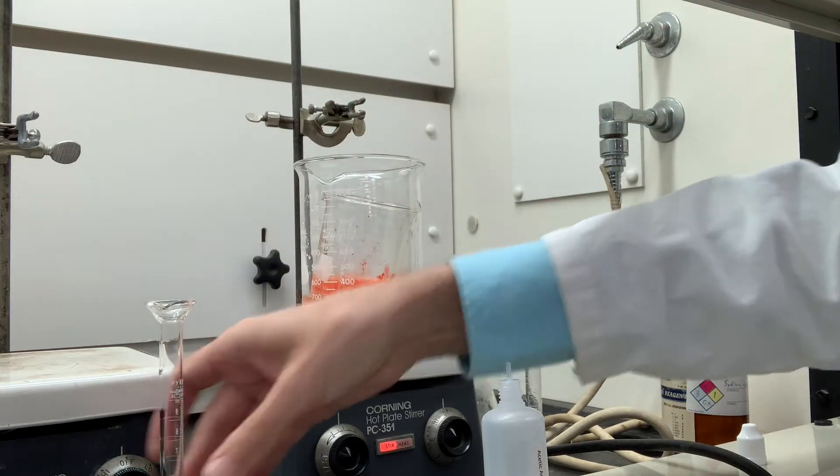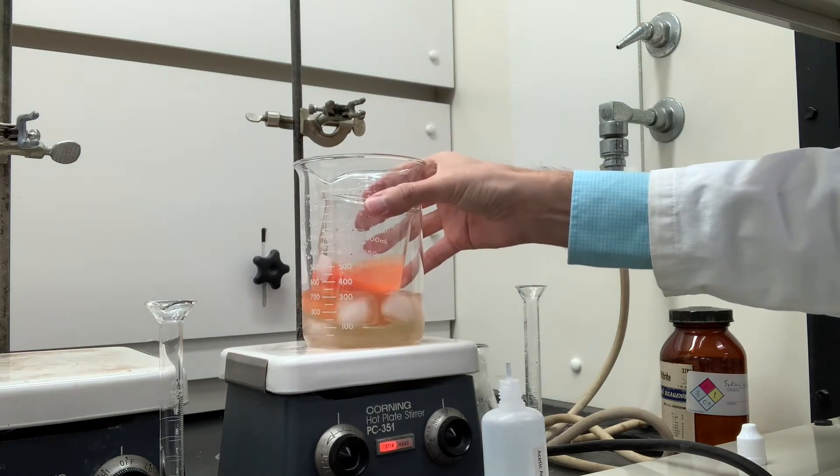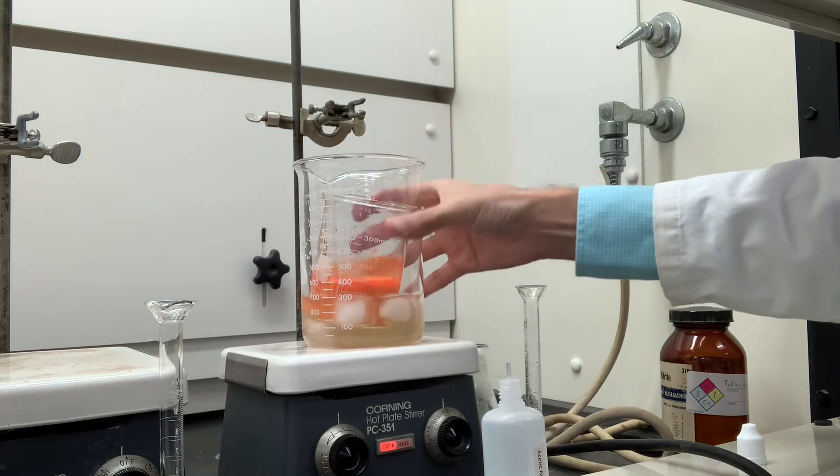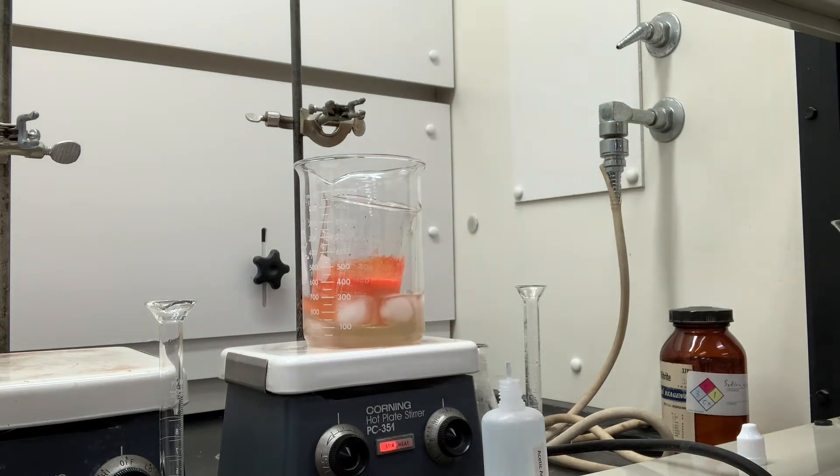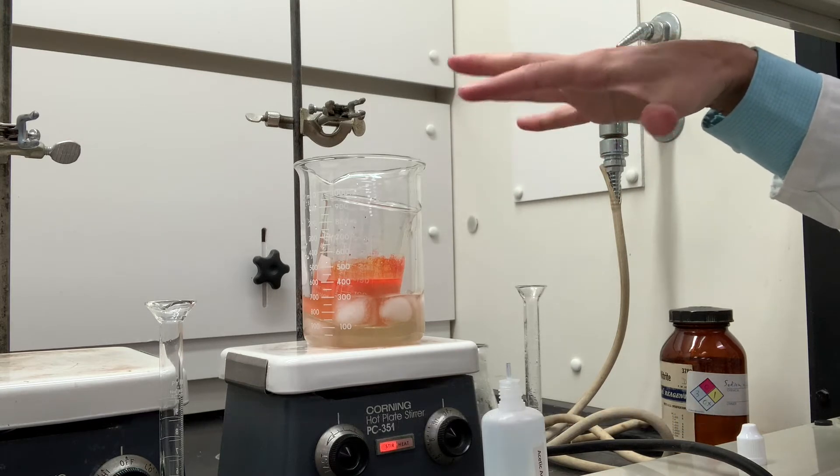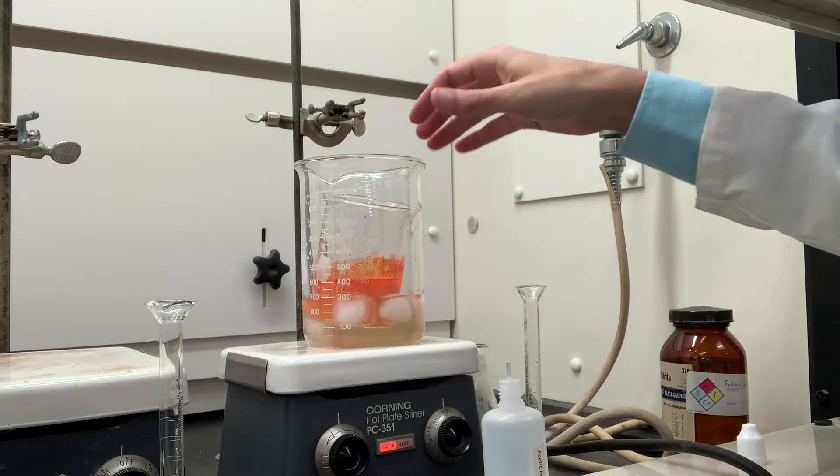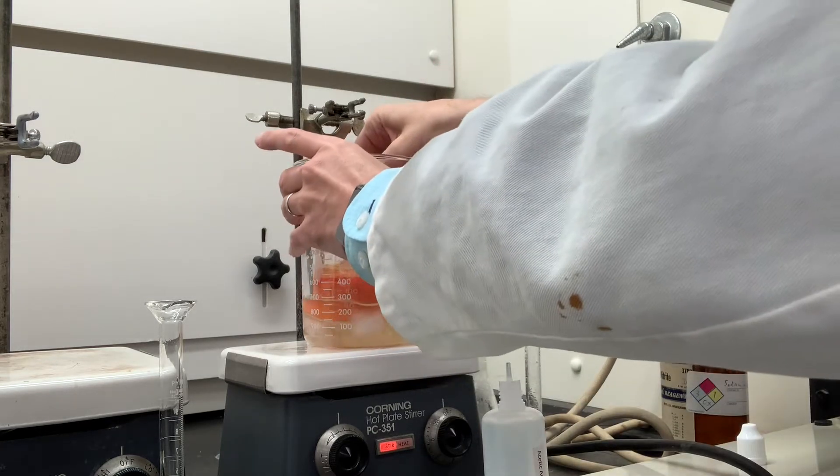As you can see, the color is beginning to change to a deep reddish orange there. And the procedure now says to stir this at room temperature, 20 to 25 degrees Celsius, for about 20 minutes. So I'm going to take this out of the ice bath.